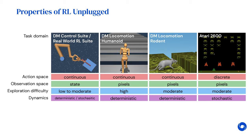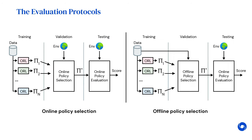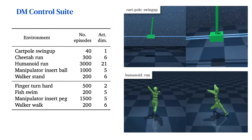Here we show task domains included in RL Unplugged and how they map to some of these challenging properties. In a strict offline setting, interacting with the environment is not allowed. This makes hyperparameter tuning, including determining when to stop a training procedure, difficult. For this reason, we define two evaluation protocols with different rules for hyperparameter tuning. The first is evaluation by online policy selection, where we allow users to evaluate policies in the environment for the purpose of hyperparameter tuning — this setting isn't realistic, but it serves as an upper bound on performance. The second is evaluation by offline policy selection, where evaluating policies in the environment is disallowed; users must perform offline policy evaluation or other methods for hyperparameter tuning. We invite the community to innovate and find which offline policy selection method works best. For each task, we clearly specify if it's intended for online versus offline policy selection.